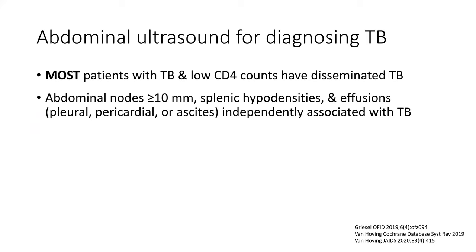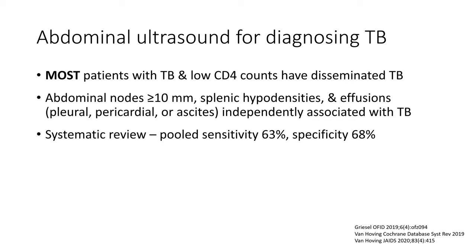What about abdominal ultrasound? Most patients with TB and low CD4 counts have disseminated TB — if you biopsy or autopsy them, you'll find it in nearly everybody. Studies, including ours, showed that abdominal lymph nodes of decent size, splenic hypodensities, and the presence of effusions are all independently associated with TB. However, in a Cochrane review by Neil van Hoving as part of his PhD, pooled sensitivity and specificity were only 60 to 70%, which is not great. Lymphoma, for instance, can cause splenic hyperdensities and mimic all the features of TB.